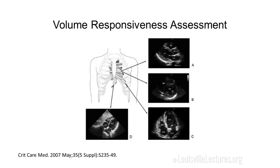For those rotating in the ICU, we always emphasize the main echocardiographic views: the parasternal long axis, the parasternal short axis, the apical four-chamber, and the subcostal four-chamber. We use these systematically in our patients in the ICU and in the emergency room.